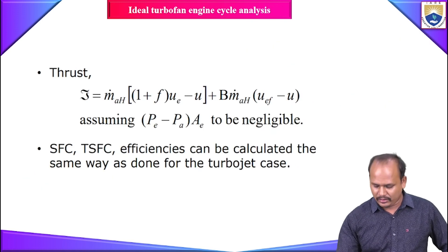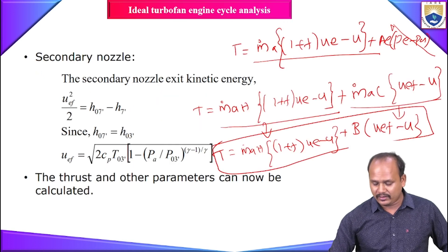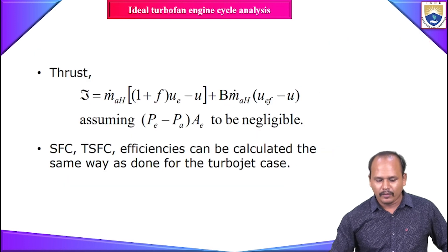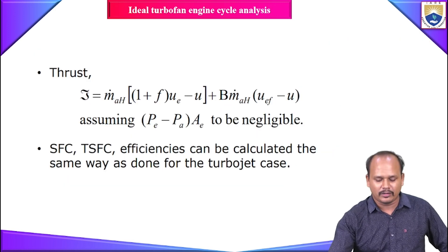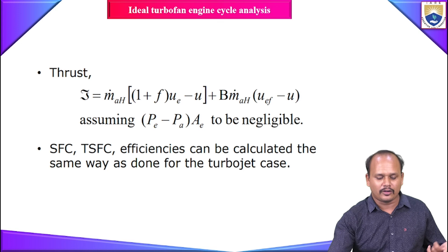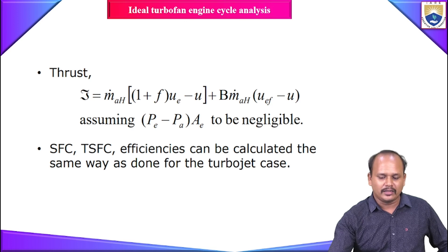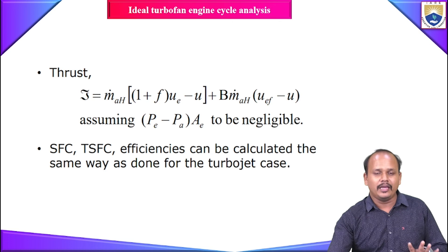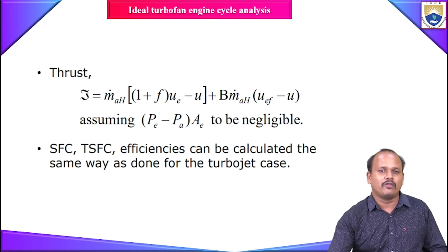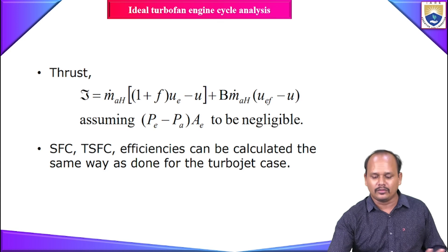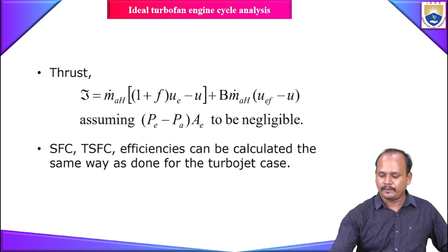Once the thrust is found, we can calculate all performance parameters — propulsive efficiency, thermal efficiency, overall efficiency, and thrust specific fuel consumption — using formulas similar to those for the turbojet engine. With this, the ideal cycle analysis of the turbofan engine is complete. Remember, this analysis applies only to an unmixed twin spool turbofan engine; a mixed turbofan engine would require a different approach. Like, share, subscribe, and hit the bell icon for more updates.